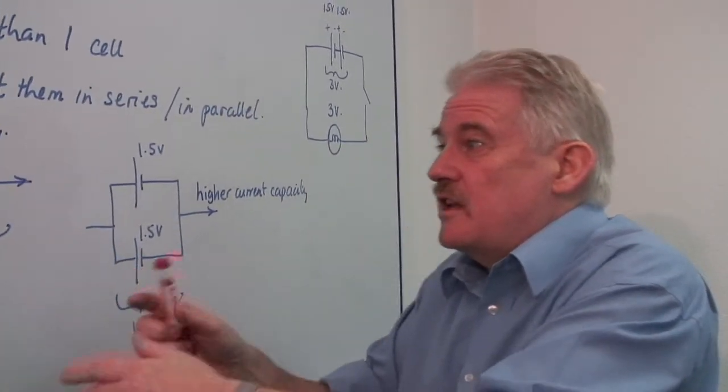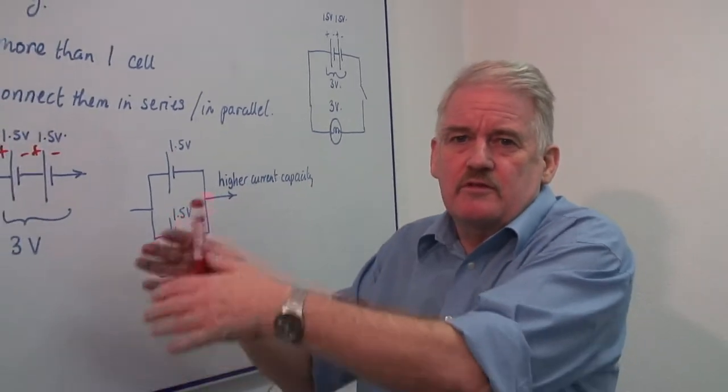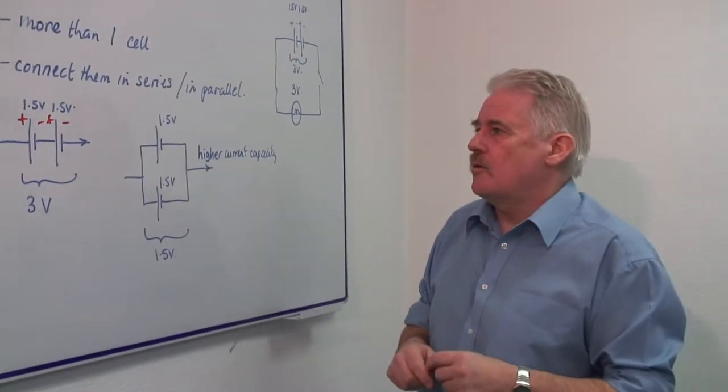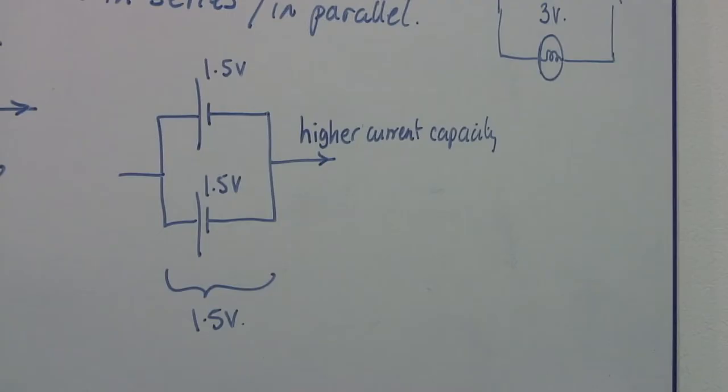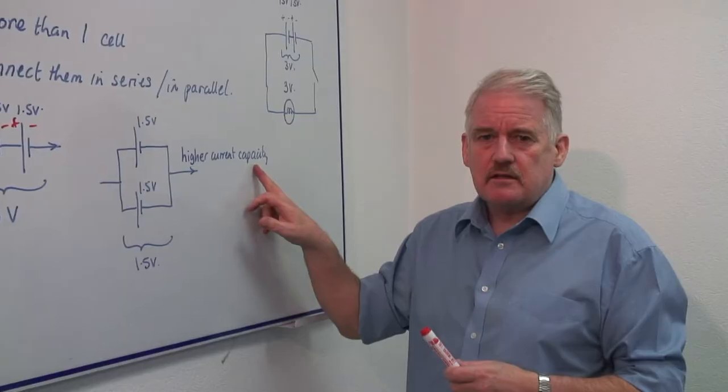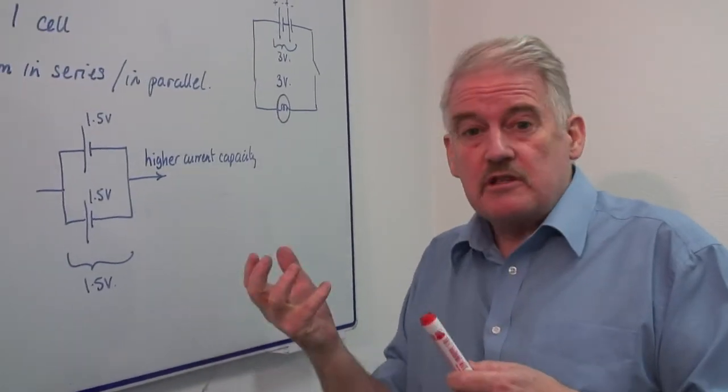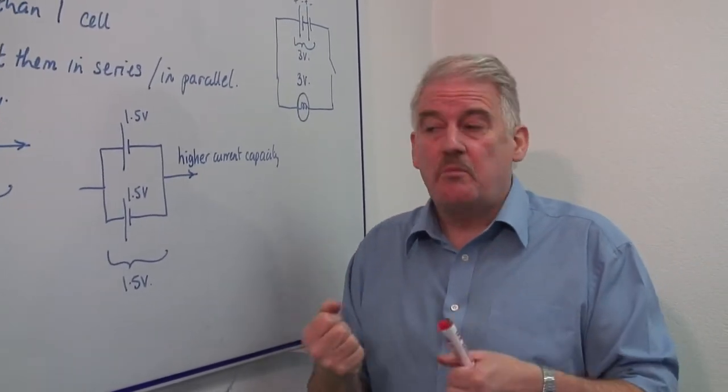Well, sometimes you want a higher current capacity. You want more current in the circuit. The object you're using takes more current, more power. Therefore, very often, whilst the voltage might be the same, you actually need more current.